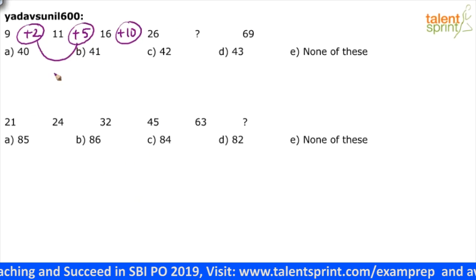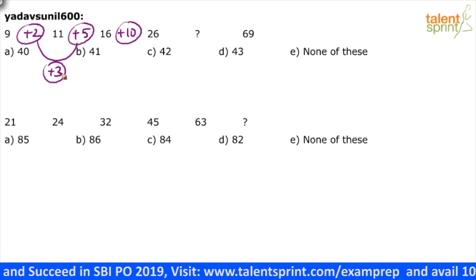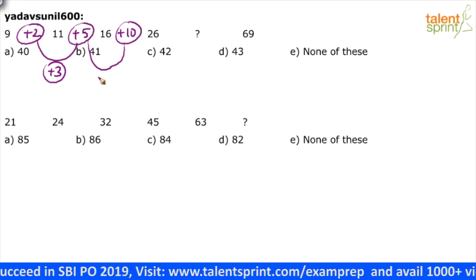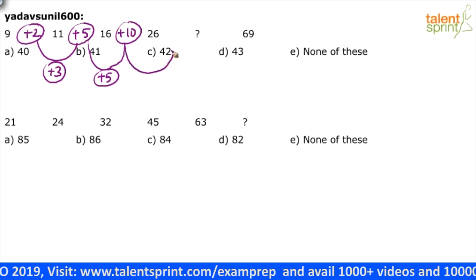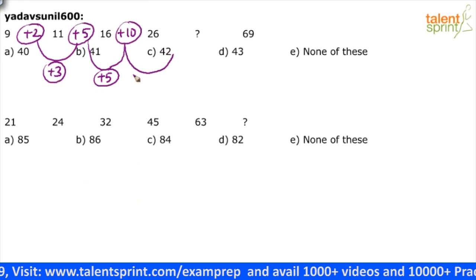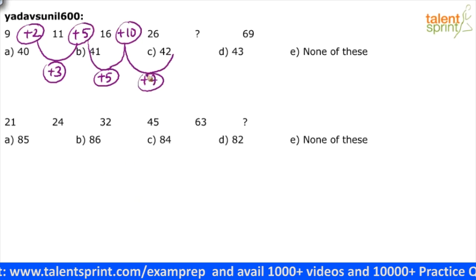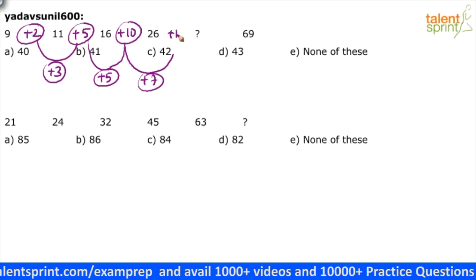But if I take the differences of differences, plus 2 plus 3 will give you plus 5, plus 5 plus 5 will give you plus 10. So let me just proceed. If this way I have to continue, this should be, see this is 3, 5, right? So this should be 7, plus 7. So 10 plus 7, this will become plus 17.